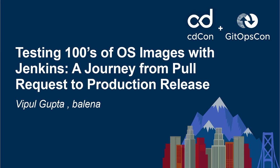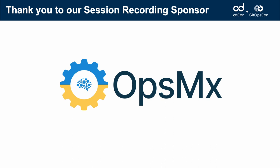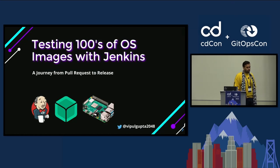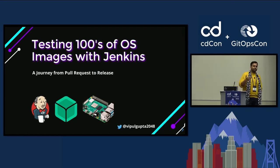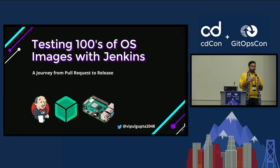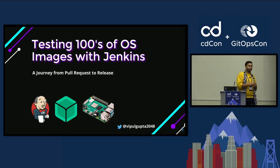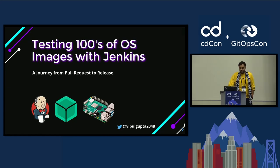Thank you all for coming. The talk is going to be about testing hundreds of OS images with Jenkins. What I wanted to talk about today is something you can take home with, something you can use — and especially something that's quite accessible. We're going to be talking about quite the journey from pull request to release, and it's going to be fun.